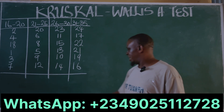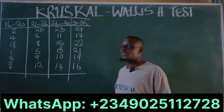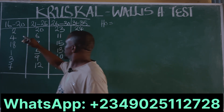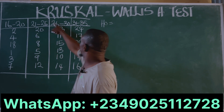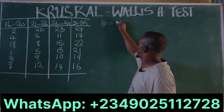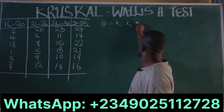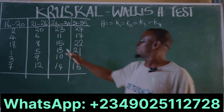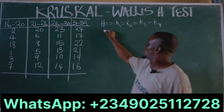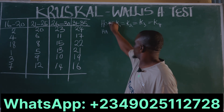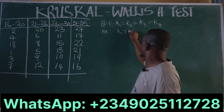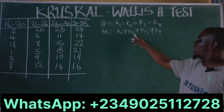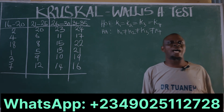So since we have the ranks, the next thing is to state the hypothesis. Our H0 is K1 = K2 = K3 = K4, because we have four groups — meaning the ranks of the scores for all four groups are equal. The alternative hypothesis H1 is that K1 ≠ K2 ≠ K3 ≠ K4, or equivalently, at least two groups are not equal.